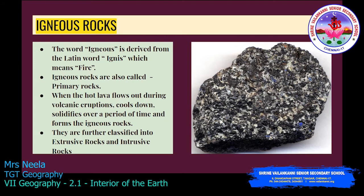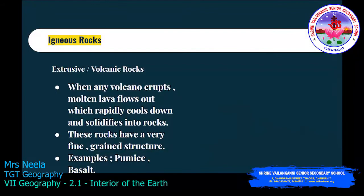Igneous rocks are further classified into extrusive and intrusive rocks. Extrusive rocks are also called volcanic rocks. When a volcano erupts, the molten lava flows out, which rapidly cools down and solidifies into rocks. These rocks have a very fine-grained structure. An example of extrusive rocks is pumice.